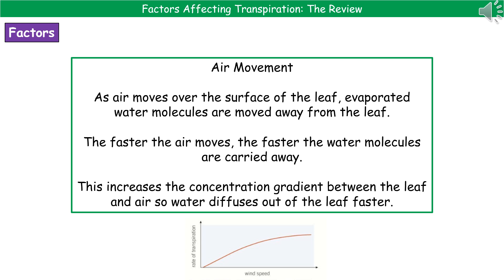You can see the graph at the bottom — it's not just a diagonal line, it starts to curve at the end. The reason for that is that even when the wind blows faster and faster, there will come a point when it's no longer air movement that can affect the rate of transpiration.